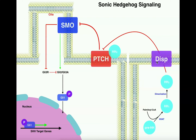Once dimerization occurs, this cell is free to secrete hedgehog out into the extracellular fluid, and it requires this protein called DISP — short for DISPATCHED. This protein is necessary for the secretion of hedgehog dimers. When hedgehog is secreted, it acts as a paracrine signal and binds to a receptor on a nearby cell — probably a cell adjacent to it or a couple of cells over — and that receptor is called patched. What hedgehog does by binding to patched is it inhibits patched.